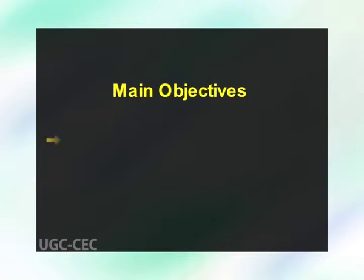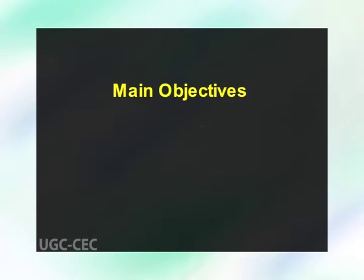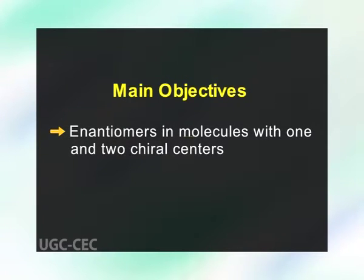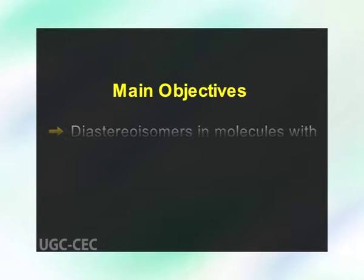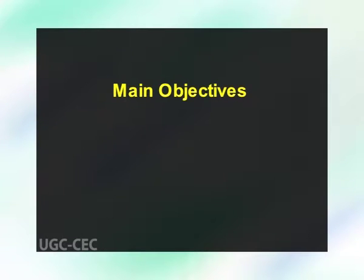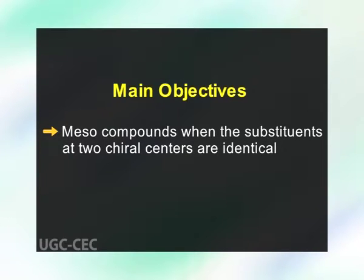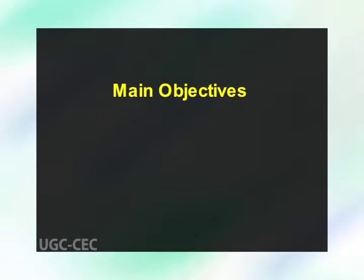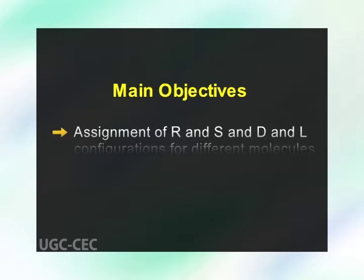Hello dear students, today we are going to discuss the topic on optical isomerism and configurations of optical isomers. The main objectives are to know about chiral and achiral objects and molecules, enantiomers in molecules with one and two chiral centers, diastereoisomers in molecules with two chiral centers, meso compounds when the substituents at two chiral centers are identical, and assignment of R, S, D, and L configurations for different molecules.